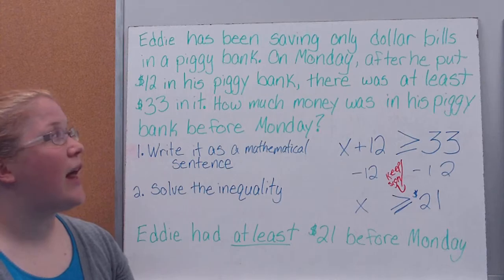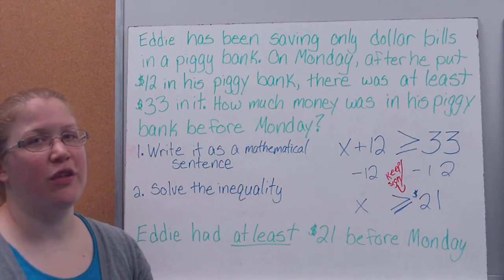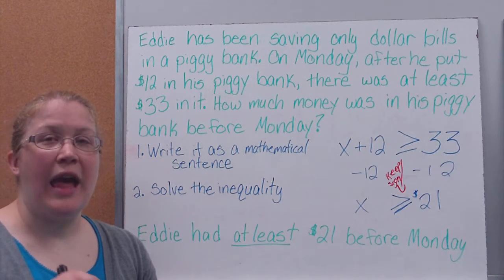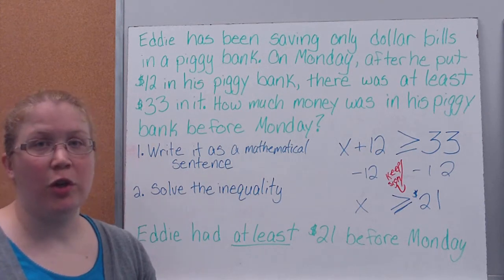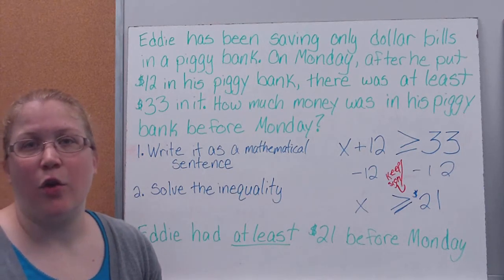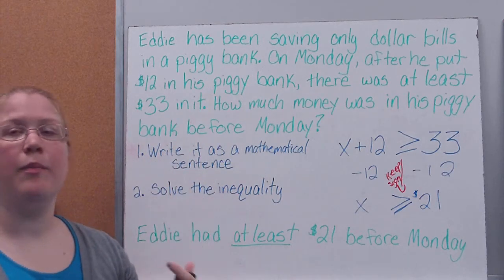on Monday, after he put $12 into his piggy bank, there was at least $33. Meaning at least there could have been $33 or there could have been more. We're not sure. He, like me, was too lazy to crack it open and count his money. So how much money was in his piggy bank before Monday?